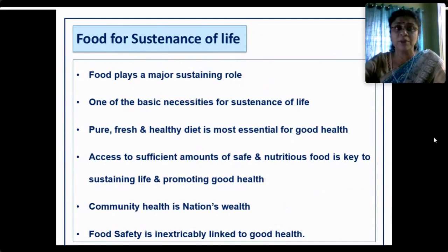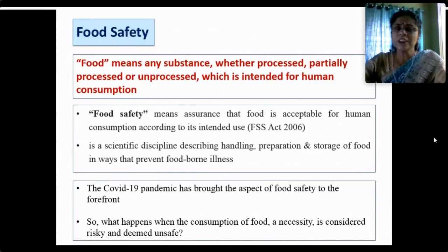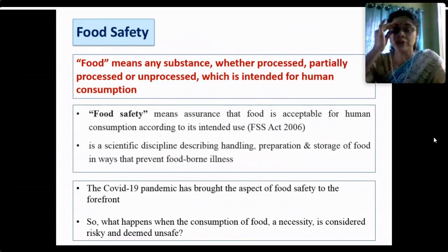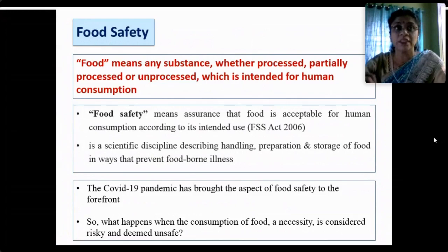What is food? The scientific definition states that food means any substance — raw material, processed, partially processed or unprocessed — which is intended for human consumption. As per the FSSA Act 2006, food safety means assurance that food is acceptable for human consumption according to its intended use. Two important words to heed here: human consumption and intended use.